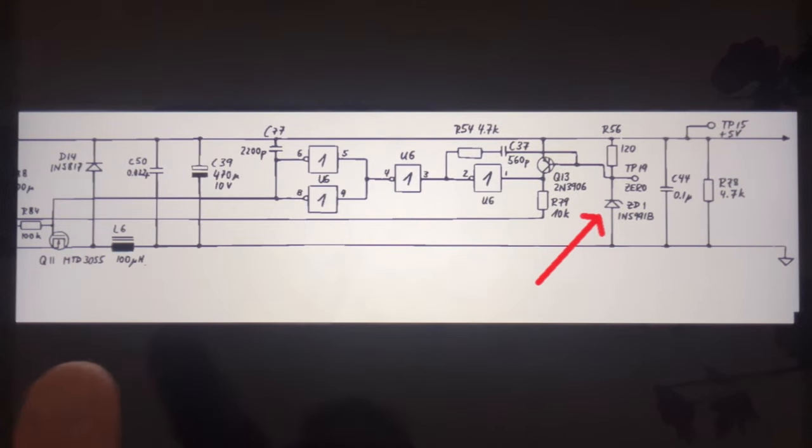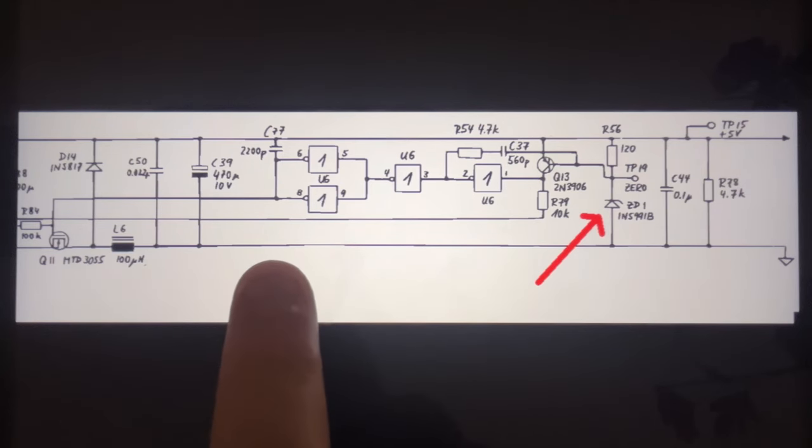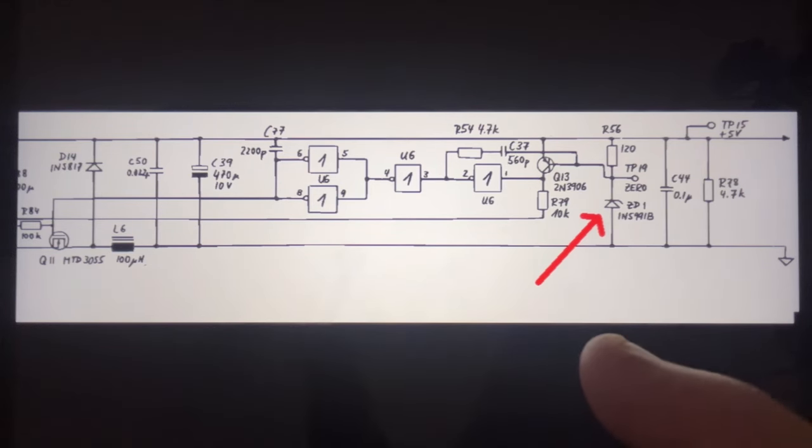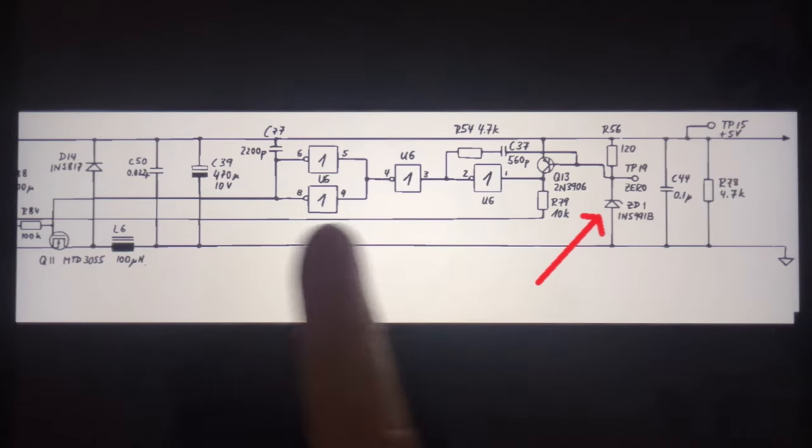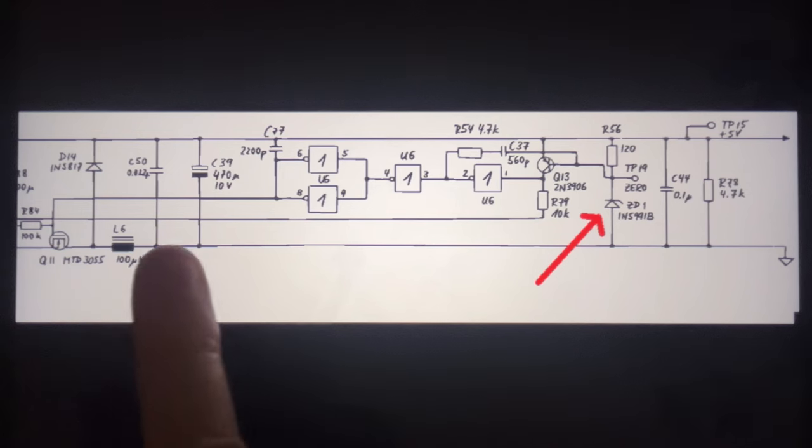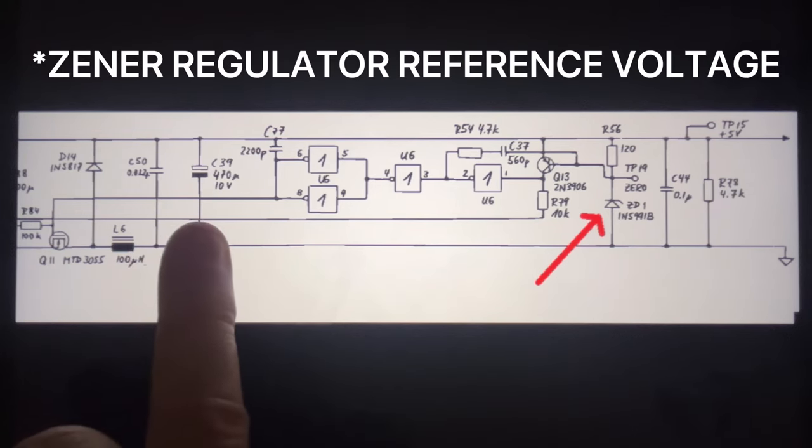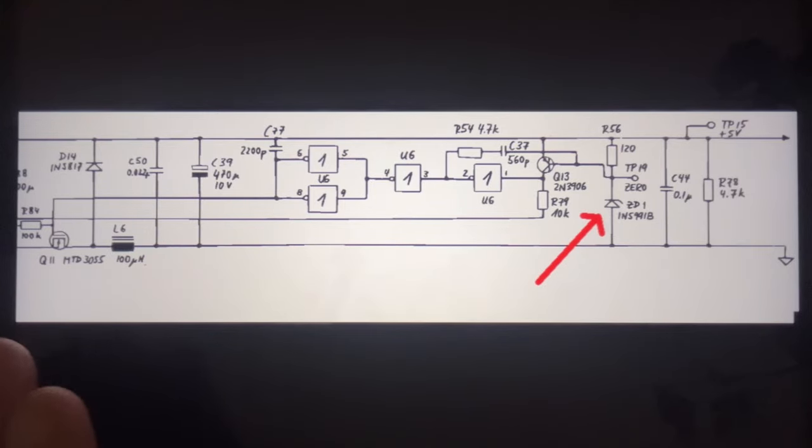It controls the switching of this FET at high frequency through a series chain of inverters that results, in total, in a single NOT gate. The whole idea is feedback from the reference voltage switches the FET to maintain the Zener voltage on this capacitor here. Switching of this FET does heaps more of the work than the Zener and nothing heats up. Everything's good as long as that all works.